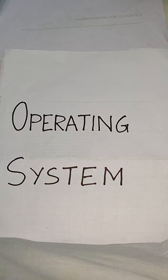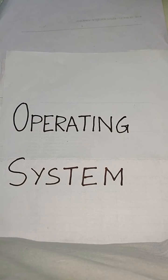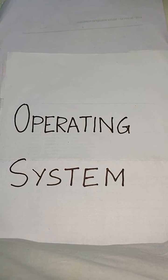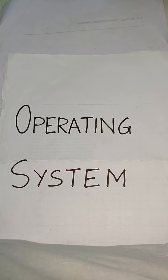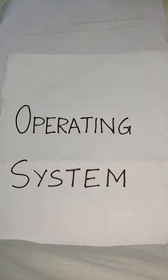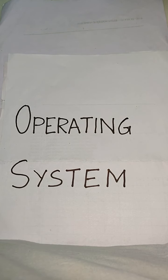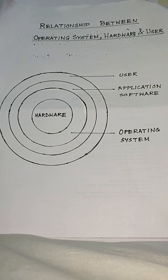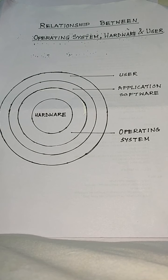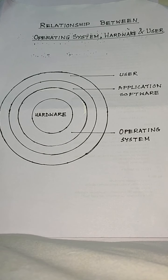Hello children, today we will discuss about operating system. A computer is composed of hardware and software. Hardware refers to the machinery that understands only machine language. Software, on the other hand, refers to the set of programs that make the hardware work. Software most of the times is written in a language other than the machine language.